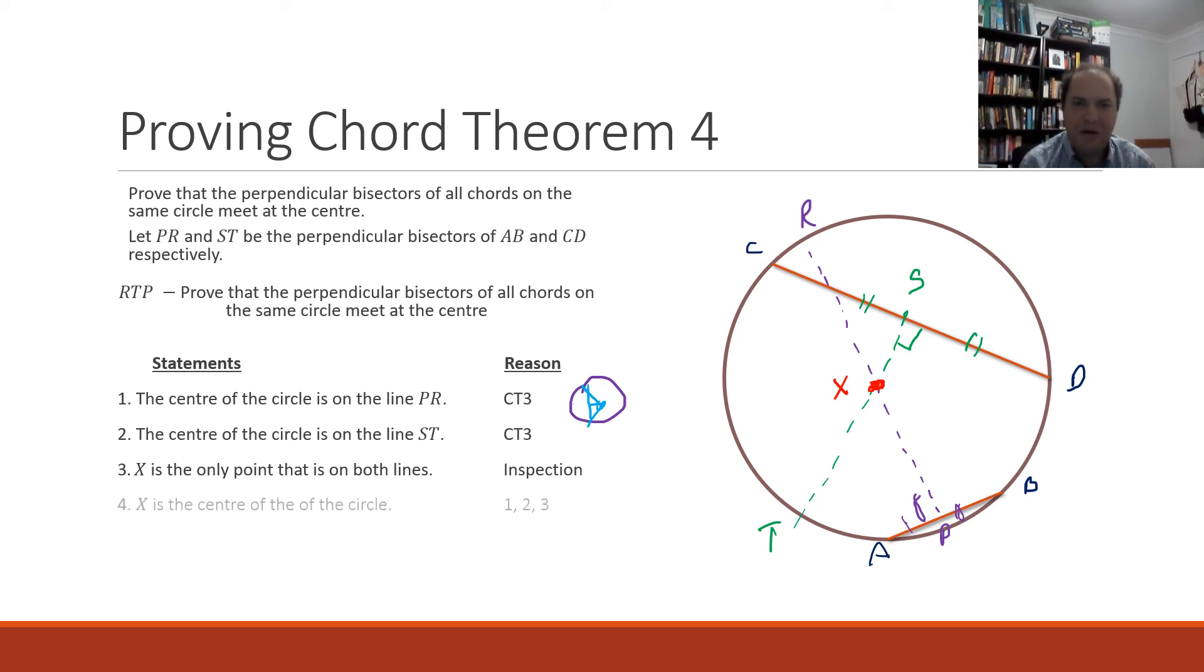So that must be the only location for the center of the circle because the center must be on PR and the center must be on ST. So that point X where those lines cross must be the center of our circle.